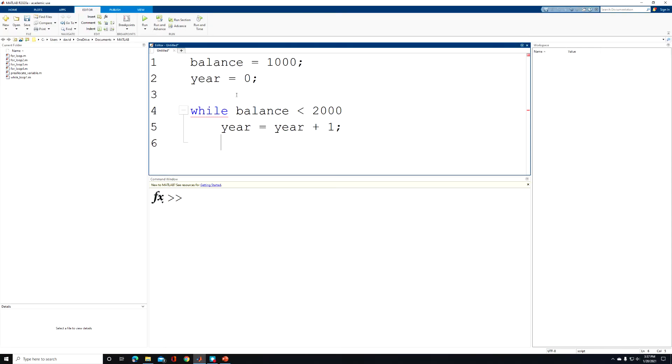So our balance is assigned the value of the current balance, which on our first loop pass is $1,000 plus interest. And in this case, we are assuming a 6% rate of return. And I will suppress this statement so it's not output to the command window during each loop pass.